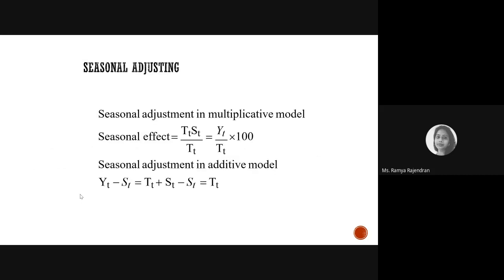To find out the seasonal effect in a multiplicative model, we use the formula y divided by t, multiplied by 100 — where y is your actual value and t is your trend. In an additive model, it is y minus s, meaning you subtract seasonality from your actual value.